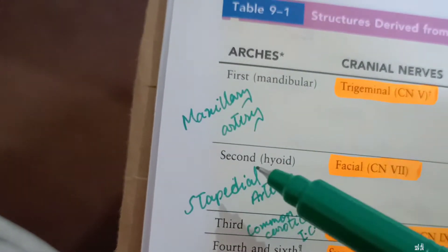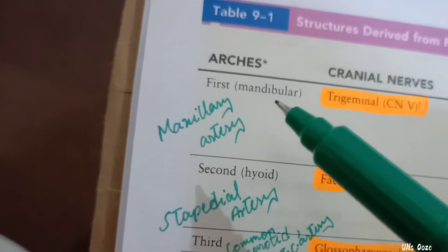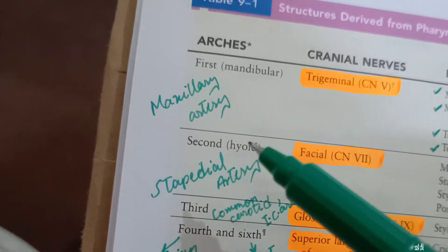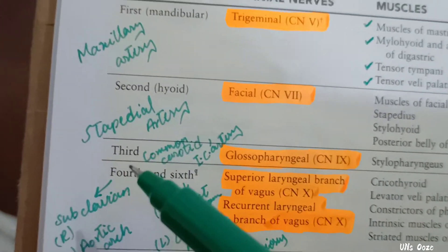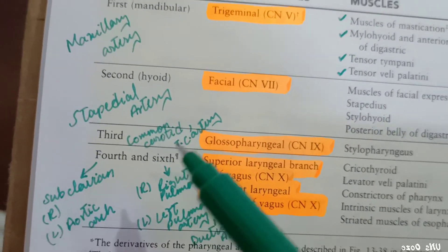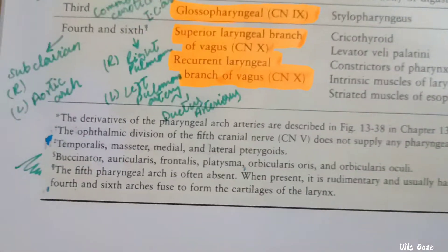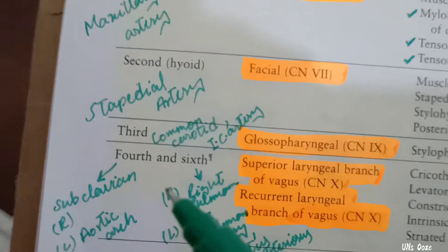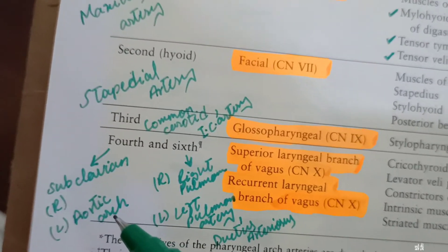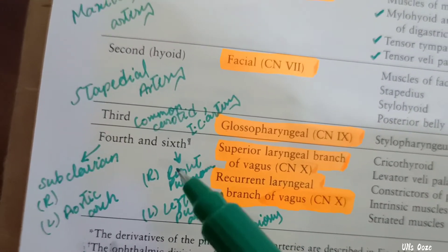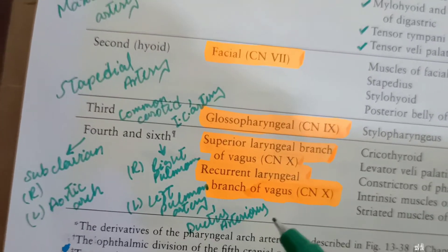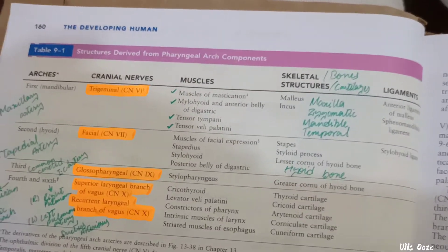For arteries: the first mandibular arch gives the maxillary artery. The second pharyngeal arch gives rise to the stapedial arch. The third pharyngeal arch gives the common carotid and internal carotid arteries. The fifth pharyngeal arch is often absent. The fourth pharyngeal arch: on the right side gives the subclavian artery and on the left side gives the aortic arch. The sixth arch gives the right and left pulmonary arteries and the ductus arteriosus.